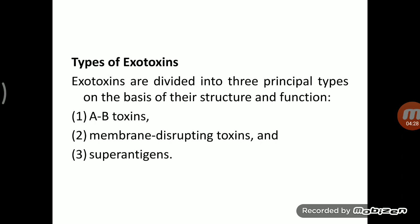Membrane disrupting toxin either shows hemolysin property or cytotoxic activity. The third type is A-B toxin — it is a type of exotoxin secreted by bacterial cells that enters the host cell and exerts toxic effects by affecting intracellular processes.